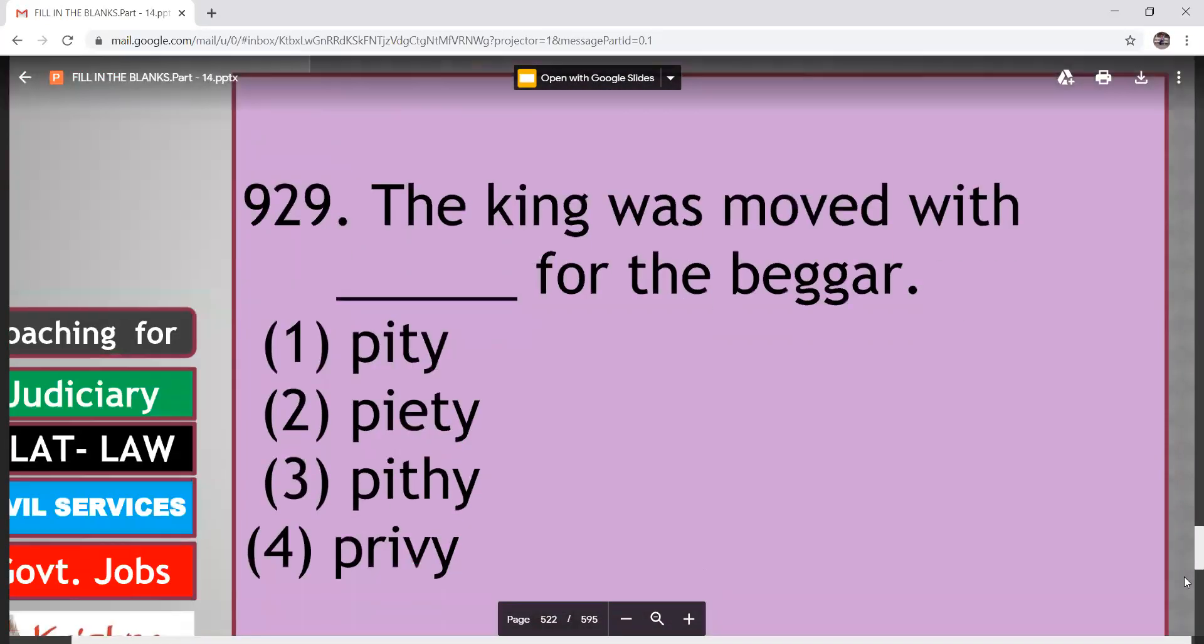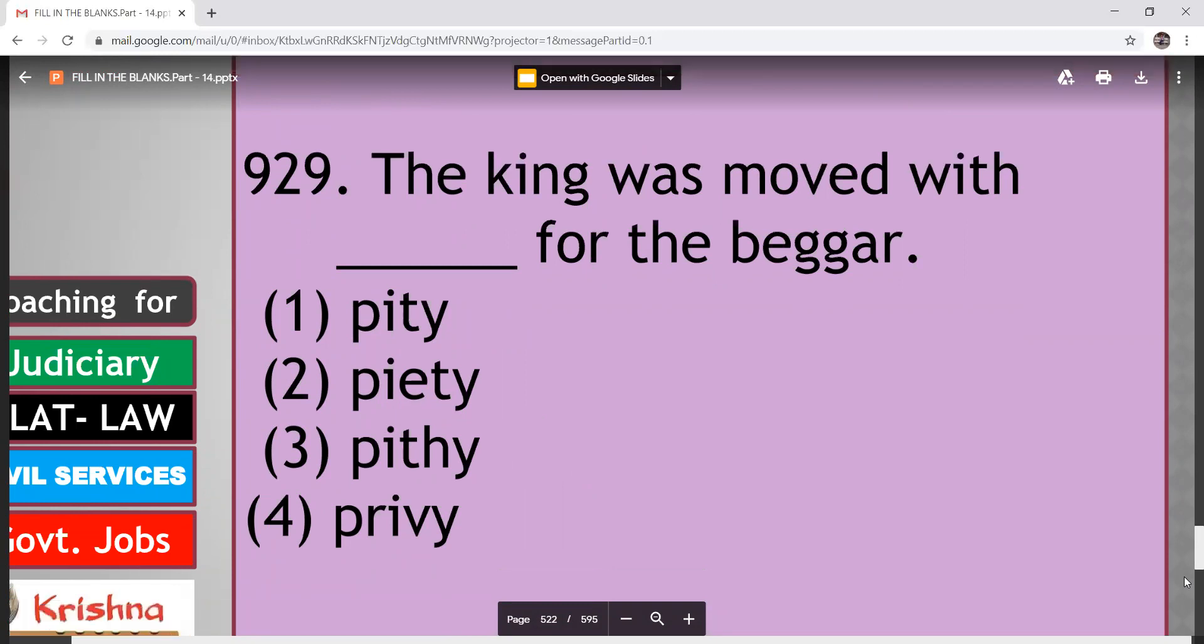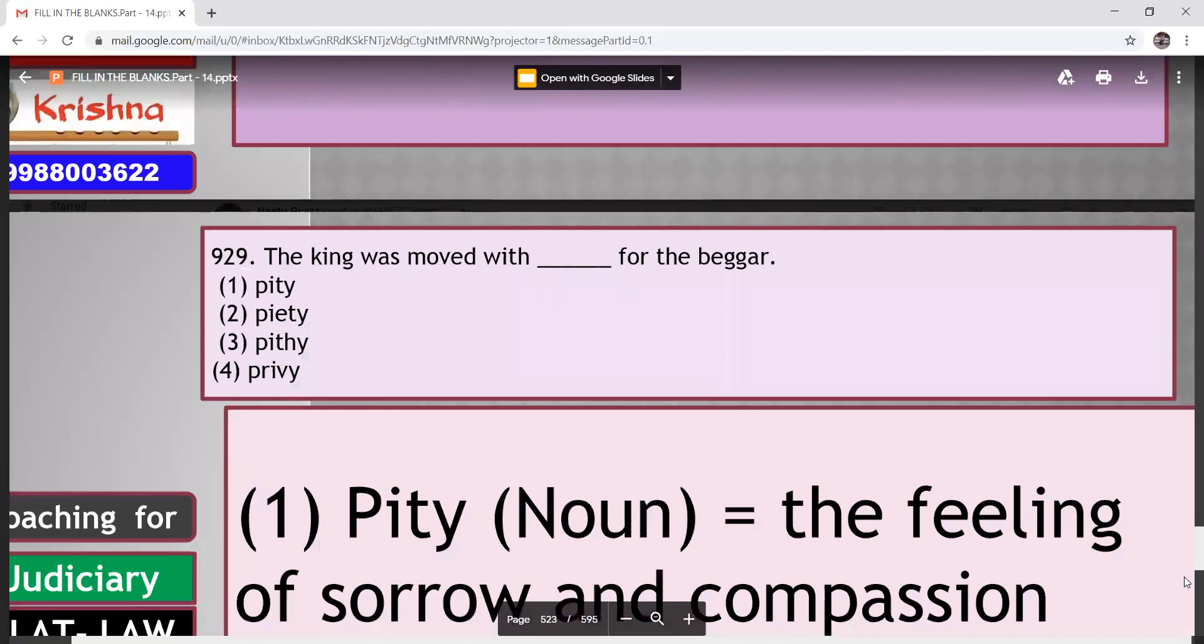King was moved with dash for the beggar. Pity, piety, pithy, privy. So beggar pe aap kya karoge? Pity karoge. So this is the first option. Pity. That is first. Feeling of sorrow and compassion. Next.